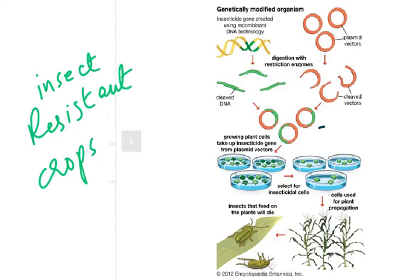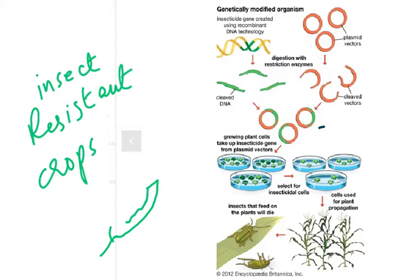How can we produce insect-resistant crops by genetic modification? The reason farmers dislike insects is that insects eat the leaves, which are the photosynthetic area. If the leaves are eaten and less surface area remains, there is less photosynthesis, meaning less glucose is made. Less glucose means less starch, less starch means less glucose available for respiration and growth, resulting in less crop yield.